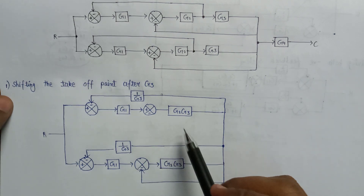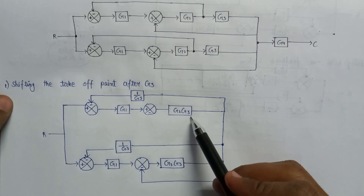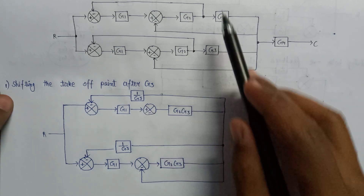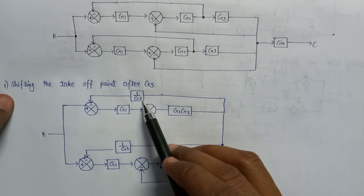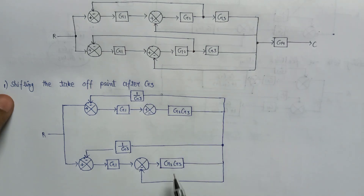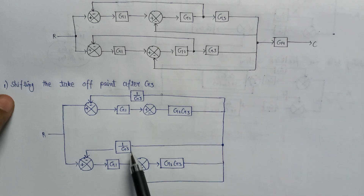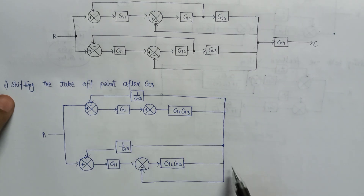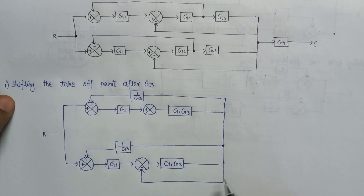So this is our simplified system. Since G2 and G3 are in series, that's why we write G2·G3 as a whole, and we shifted this takeoff point after G3, that's why 1/G3 comes in the denominator. Similarly G2 and G3 are in series, so we write G2·G3, and we shifted this takeoff point after G3, that's why 1/G3 comes here. We draw the feedback branches as they are. So this is our simplified block diagram.